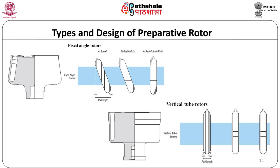Fixed angle rotors. The tubes are located in holes in the rotor body set at a fixed angle of between 14 and 40 degrees to the vertical. The centrifugal force is exerted at an angle to the tube wall. Particles move radially outward and have a short distance to travel before precipitating on the outer wall of the centrifugation tube, so sample collection is rapid. The precipitate is collected as a small compact pellet at the outermost point of the tube. This rotor is valuable for differential centrifugation and can separate particles differing significantly in their sedimentation rate.